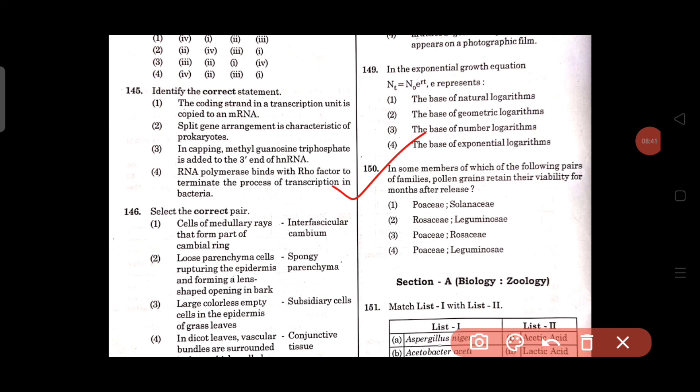Question number 150: In some members of which of the following pair of family, pollen grains retain their viability for months after release? Poaceae-Solanaceae, Rosaceae-Leguminosae, Poaceae-Rosaceae, and Poaceae-Leguminosae. The right answer is option number 2, that is Rosaceae-Leguminosae.